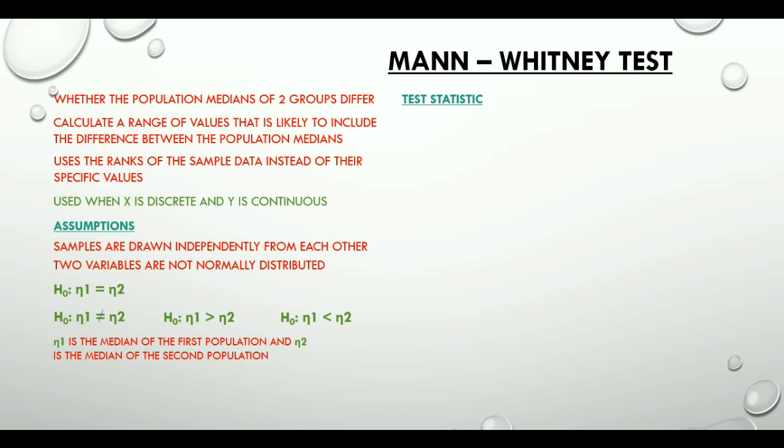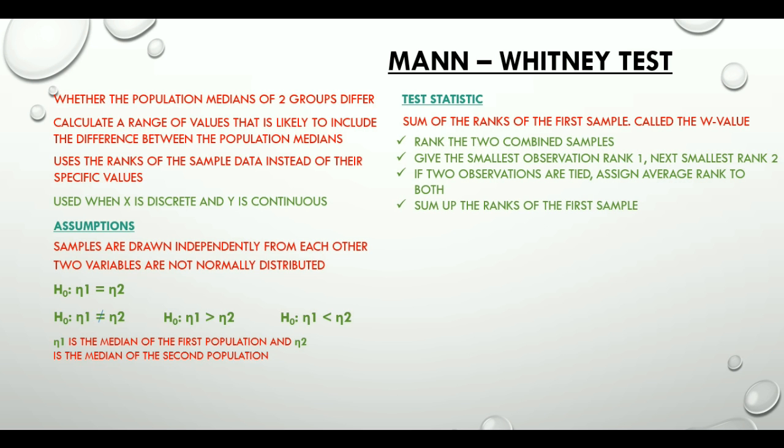Test statistic for a Mann-Whitney test is called the W value and is the sum of the ranks of the first sample. We rank the two combined samples. We give the smallest observation rank 1, the second smallest rank 2 and so on. If at any point two or more observations are tied, we assign average rank to both of them and then we sum up the ranks of the first sample. That is how we arrive at the W value or the test statistic for a Mann-Whitney test.